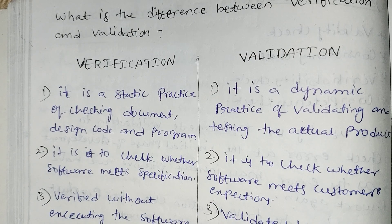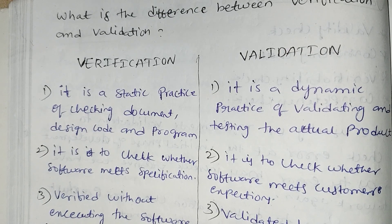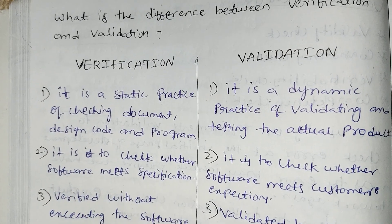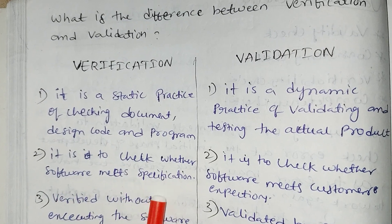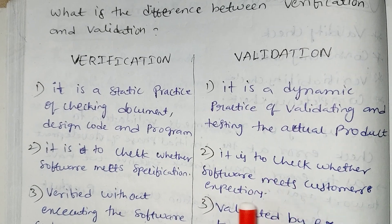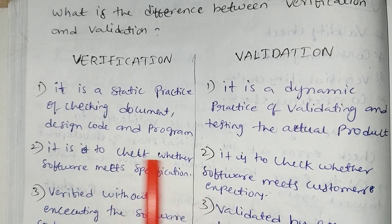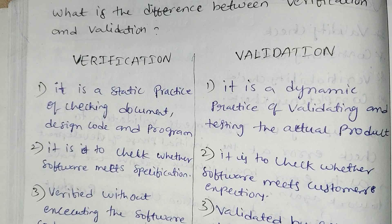Verification is static — static means fixed. Verification is just checking. Dynamic is just validate. The second difference: verification is to check whether the software meets the specification.